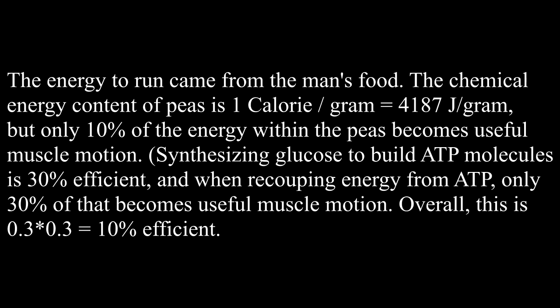The chemical energy content of peas is 1 Calorie per gram, which equals 4187 joules per gram. But only 10% of the energy within the peas becomes useful muscle motion. Synthesizing glucose to build ATP molecules is 30% efficient, and when recouping energy from ATP, only 30% of that becomes useful muscle motion. Overall, this is 0.3 times 0.3 equals 10% efficient.